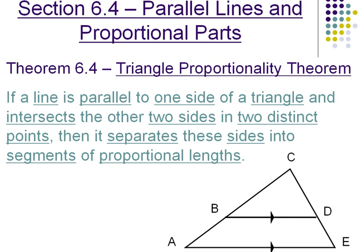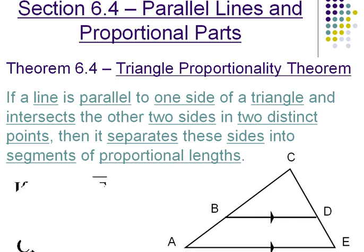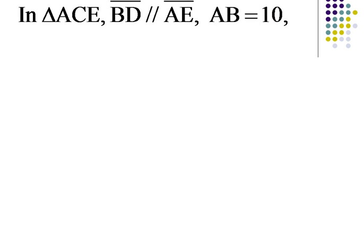We can see that here in this triangle. We have BD parallel to AE, and since that is the case, the ratio BA over CB would be the same as DE over CD. Let's see how this works in a quick example.